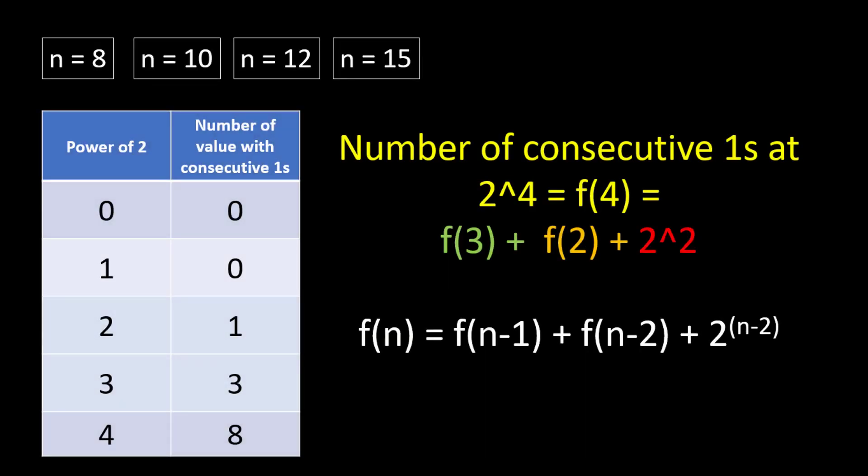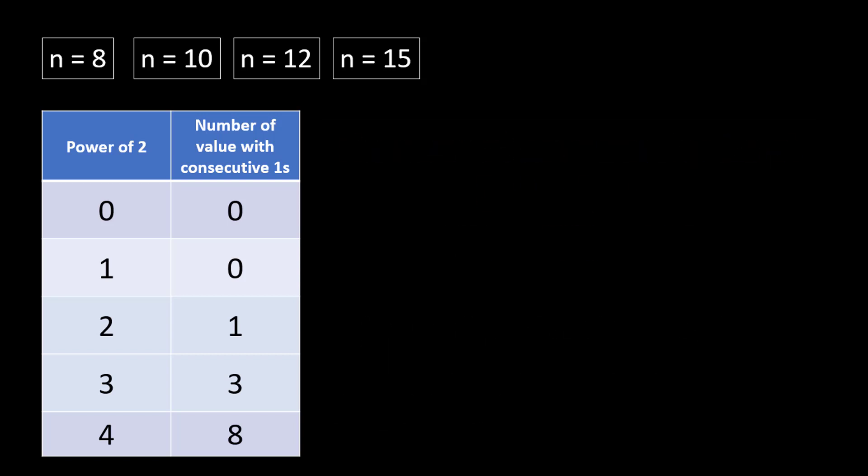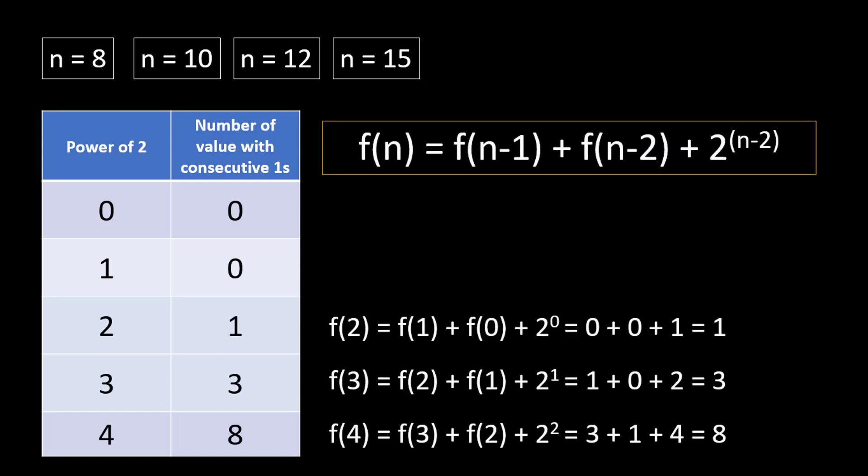Generalizing the formula: f(n) = f(n-1) + f(n-2) + 2^(n-2). This is quite similar to the Fibonacci series — we get results from the previous two calculated values. The base cases are f(0) = 0 and f(1) = 0, and we can proceed further from there. Implementing this formula and verifying against the expected results confirms it works correctly.